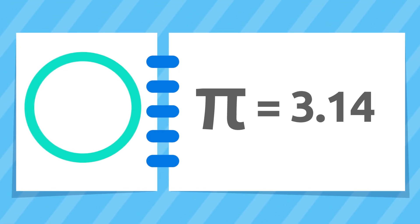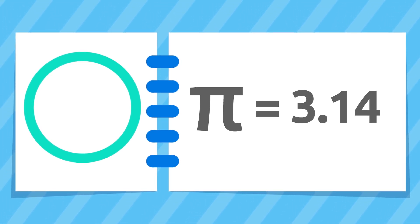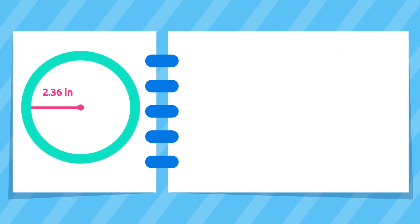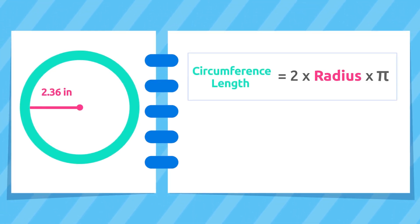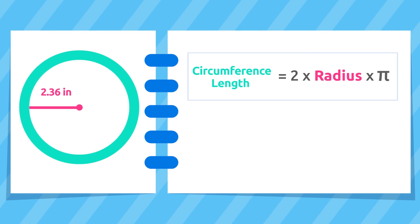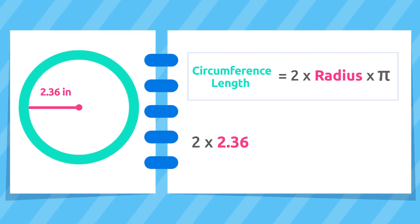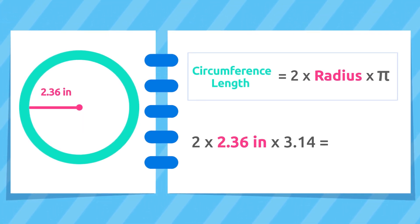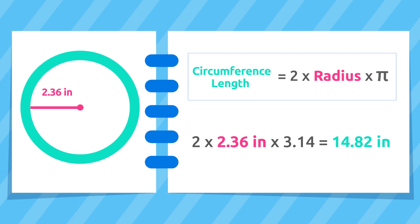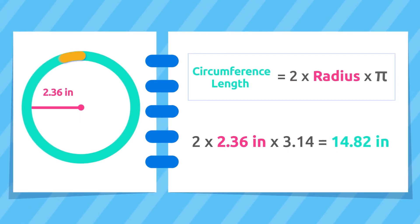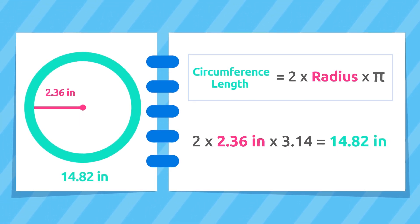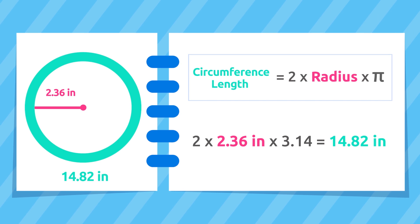Let's look at some examples. This circumference has a radius of 2.36 inches. To calculate its length, we multiply the radius by 2 and then multiply by pi. The length of this circumference equals 14.82 inches.